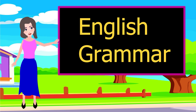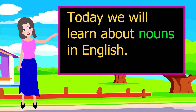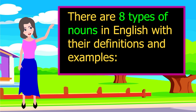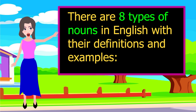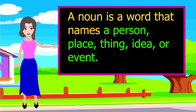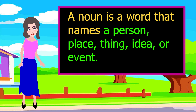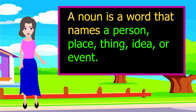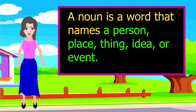English Grammar. Today we will learn about nouns in English. There are eight types of nouns in English with their definitions and examples. A noun is a word that names a person, place, thing, idea, or event.